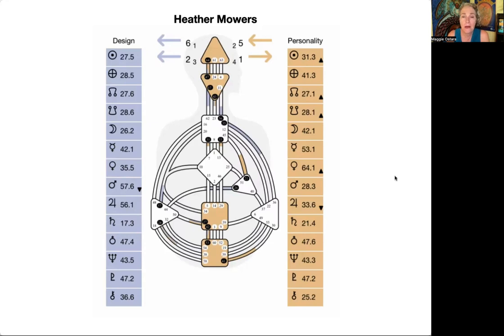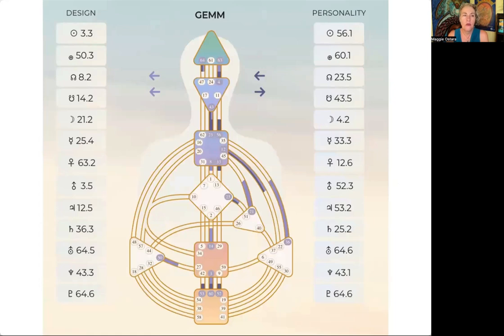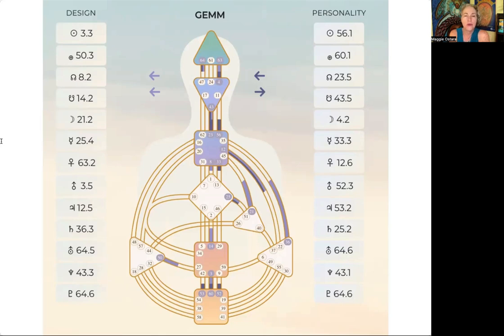Here we've got another generator. Why is this person not a manifesting generator? No motor to their throat — exactly. What gate do they have lit up the most in their chart? Just so you know, you don't have to have the sacral connected to the throat — you can have other motors connected to the throat. Any motor connected to the throat can make you a manifesting generator: it could be the will center, the emotional solar plexus, or the root through the spleen.